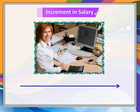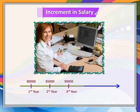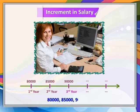Richard applied for a job and got selected. She has been offered a job with a starting monthly salary of 80,000 with an annual increment of 5,000 in her salary. Her salary for the first year will be 80,000, for the second year 85,000, for the third year 90,000, and so on.